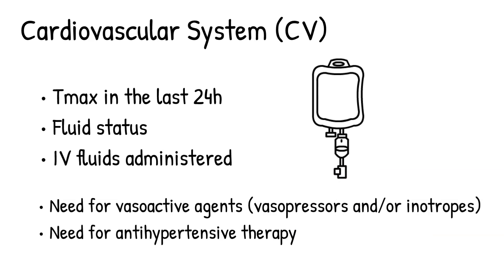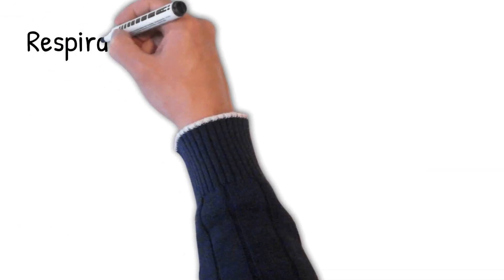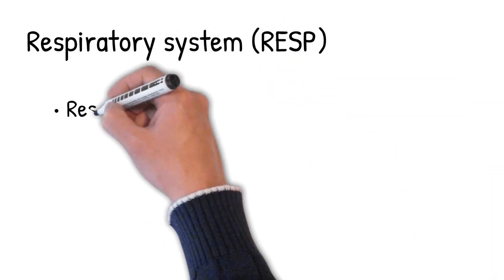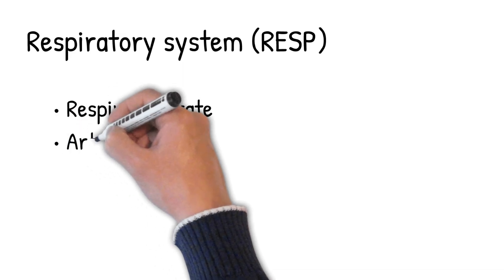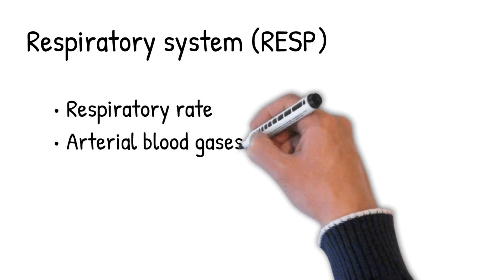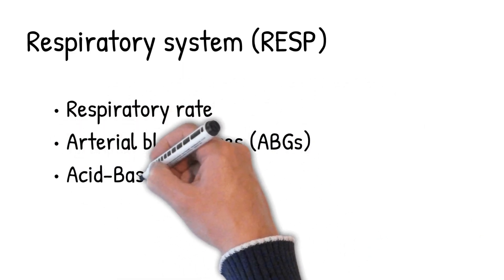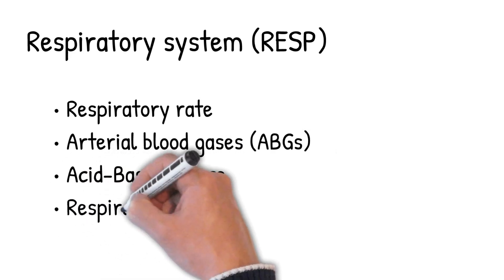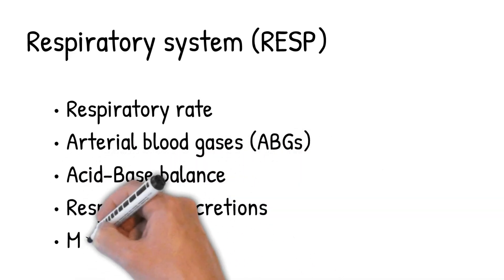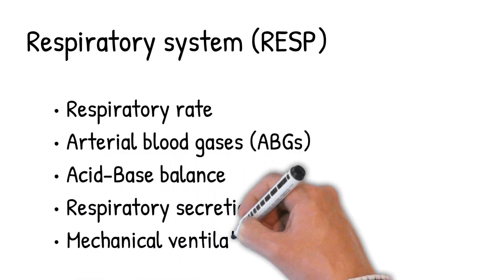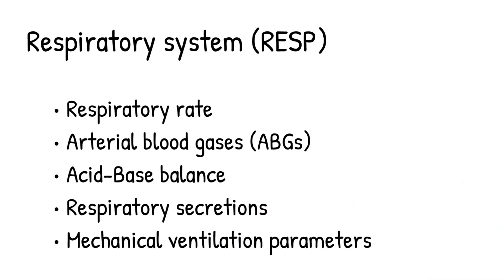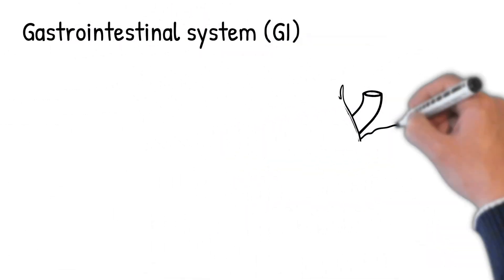After you finish cardiovascular system rounding, you go into respiratory system by looking at the respiratory rate, arterial blood gases, any acid-base imbalance issues, respiratory secretions, and the mechanical ventilation parameters to see if the patient is being weaned, improving clinically, and so on.